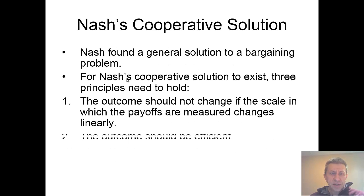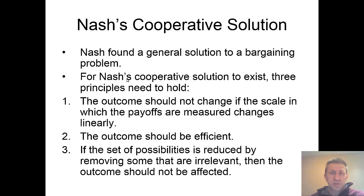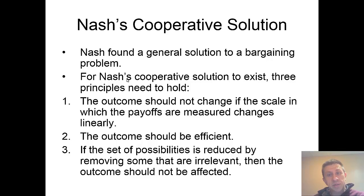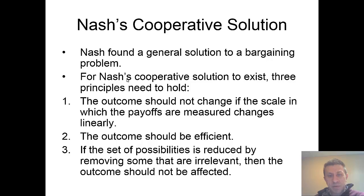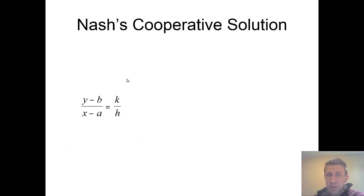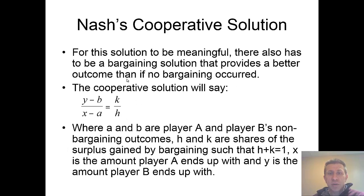So what did Nash find? The cooperative solution — this is the same John Nash from the Nash Equilibrium — Nash found a general solution to bargaining. For this solution to exist, three principles must hold: the outcome shouldn't change if the scale of payoffs changes linearly; the outcome needs to be efficient; and if the set of possibilities is reduced by removing something irrelevant, the outcome should not be affected.